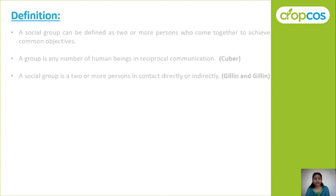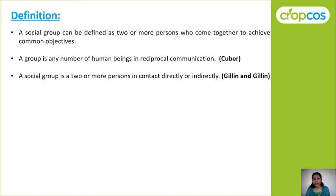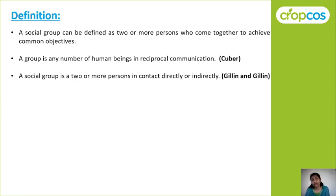There are several definitions given. First: a social group can be defined as two or more persons who come together to achieve a common objective — they have some goal which they have to achieve. For example, Kisan Call Center: there are many experts who have only one objective — to answer farmers' queries and provide solutions to their problems. So that is a social group: two or more persons who come together and achieve a common objective.